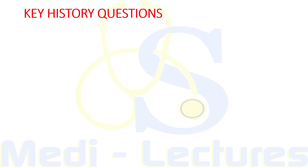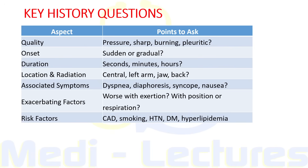Approaching the patient in ER or OPD, we have to ask key history questions regarding: quality of pain, onset, duration, location and radiation, associated symptoms, aggravating factors, and associated risk factors. For example, pressure sensation is associated with myocardial infarction, sharp pain with aortic dissection, burning sensation with GERD, and pleuritic pain with pleural effusion. A detailed history is the best tool — it often gives more clues than labs or scans.